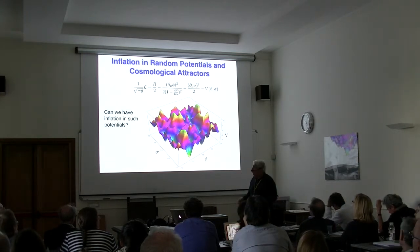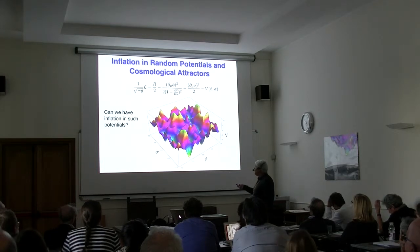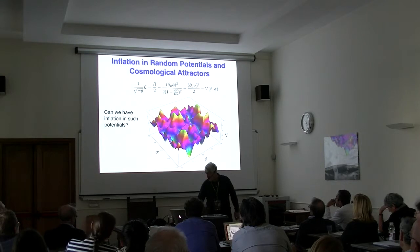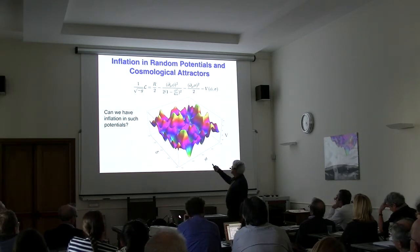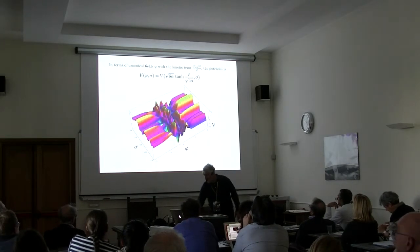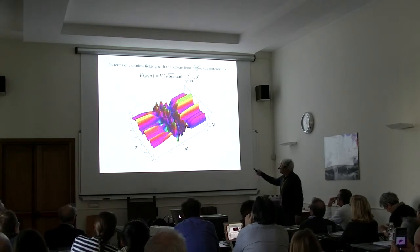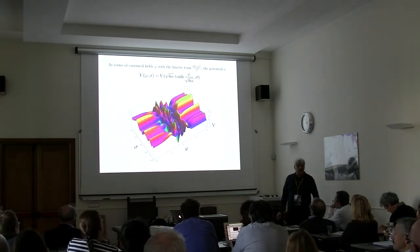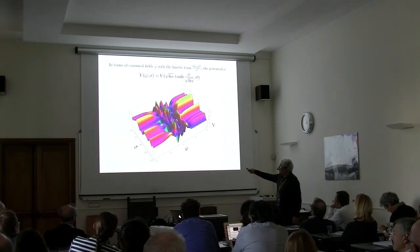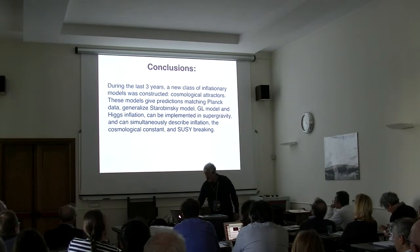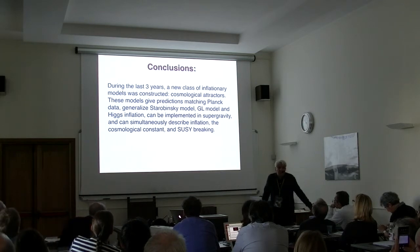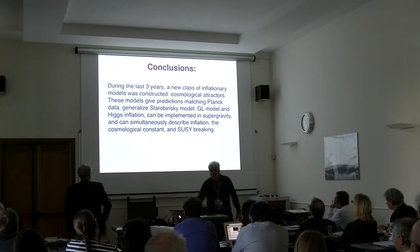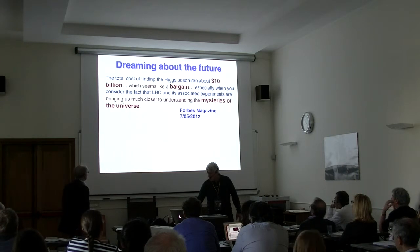This is not related to string theory — it is what you get from a random landscape of any potential. If at least one field has the alpha attractor property with a singularity in its kinetic term, then after going to canonical variables you produce all these plateaus, each with the same alpha coefficient. So they all lead to the same prediction for r but with different vacuum energies. During the last 12 years we discovered a new class of theories with universal predictions matching what Planck is now discovering.